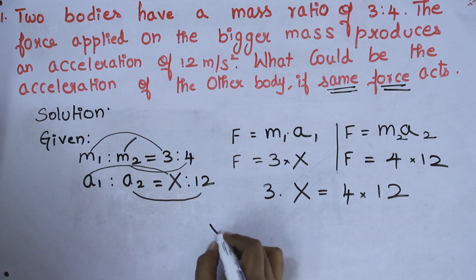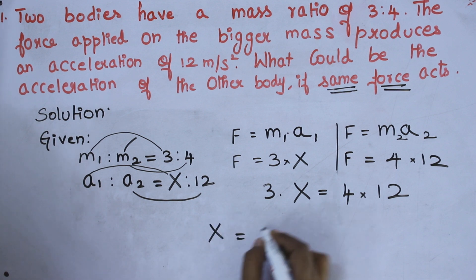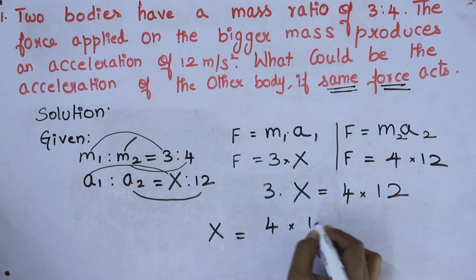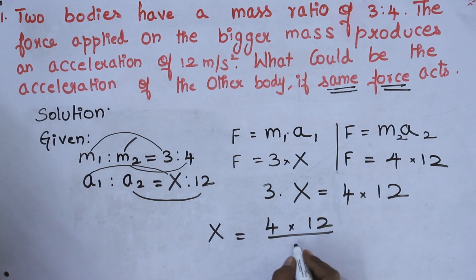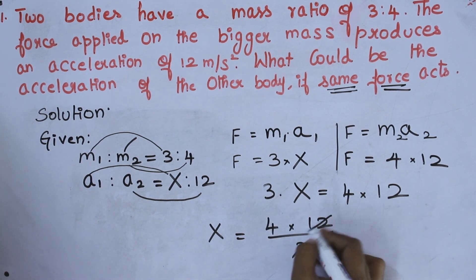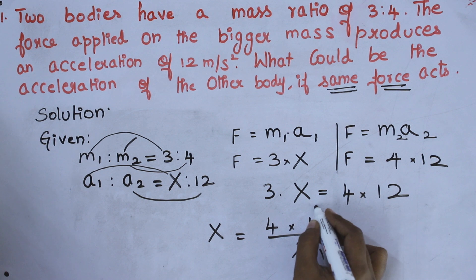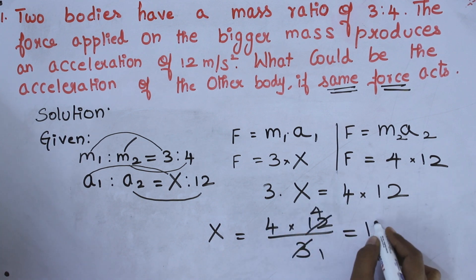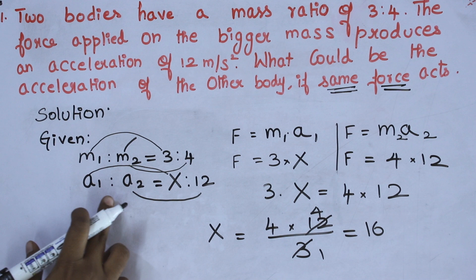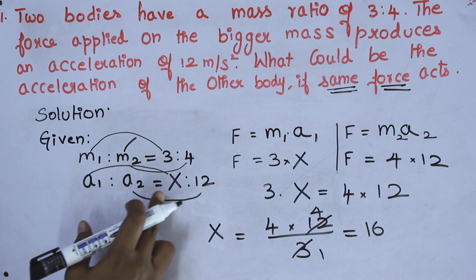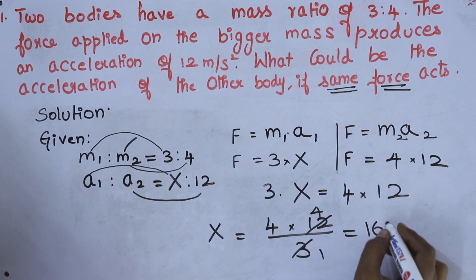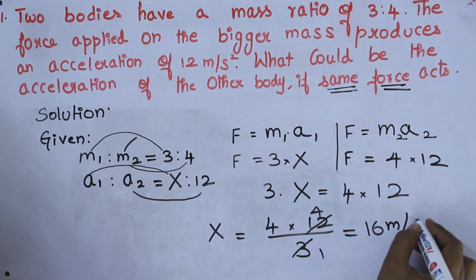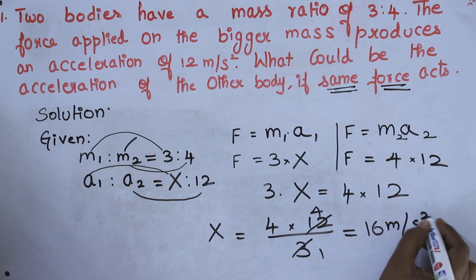We have to find X, so fix X on this side. 4 into 12 divided by 3 — cancel: 3 ones are 3, 3 fours are 12, 4 into 4 is 16. So the acceleration for mass 3 is 16 meter per second square.